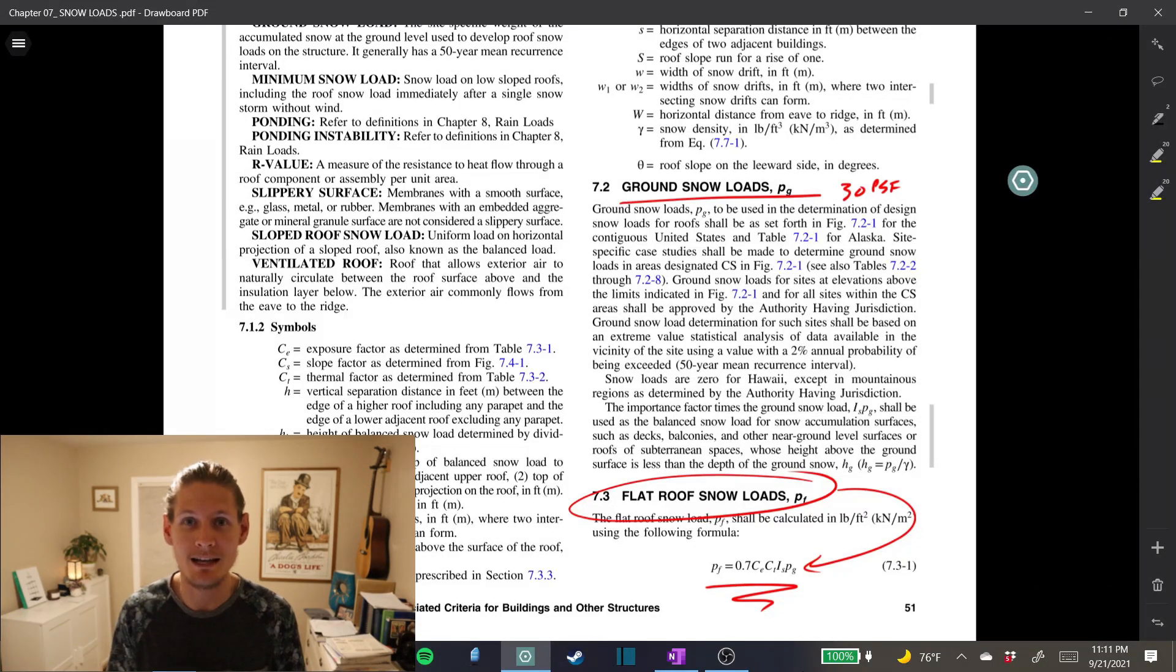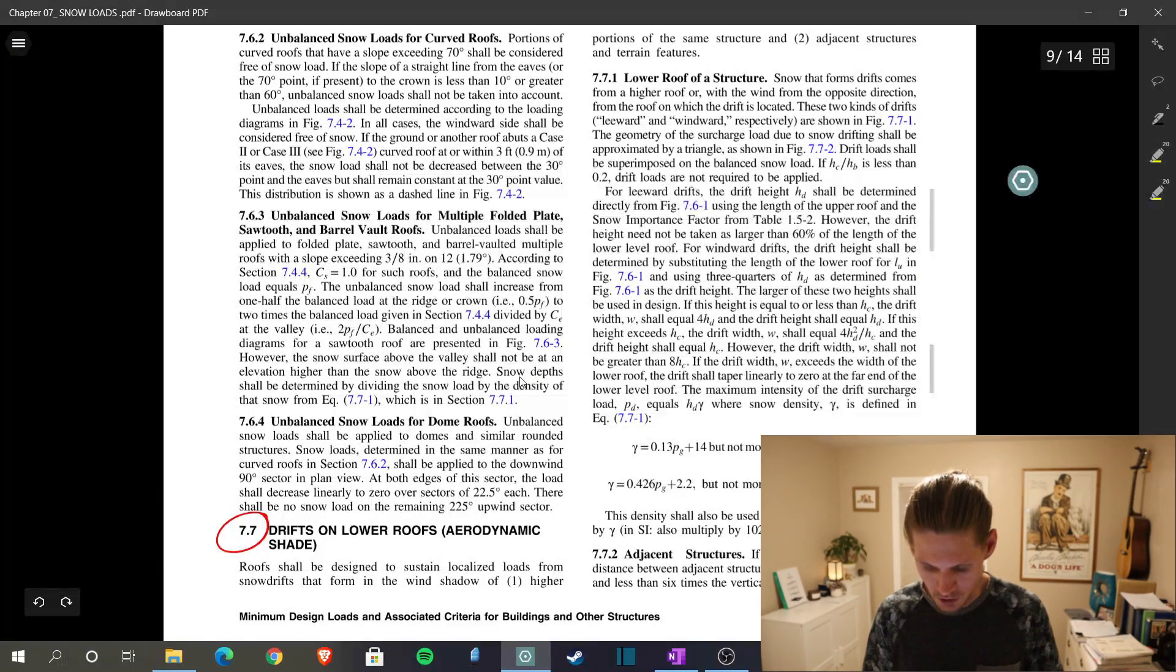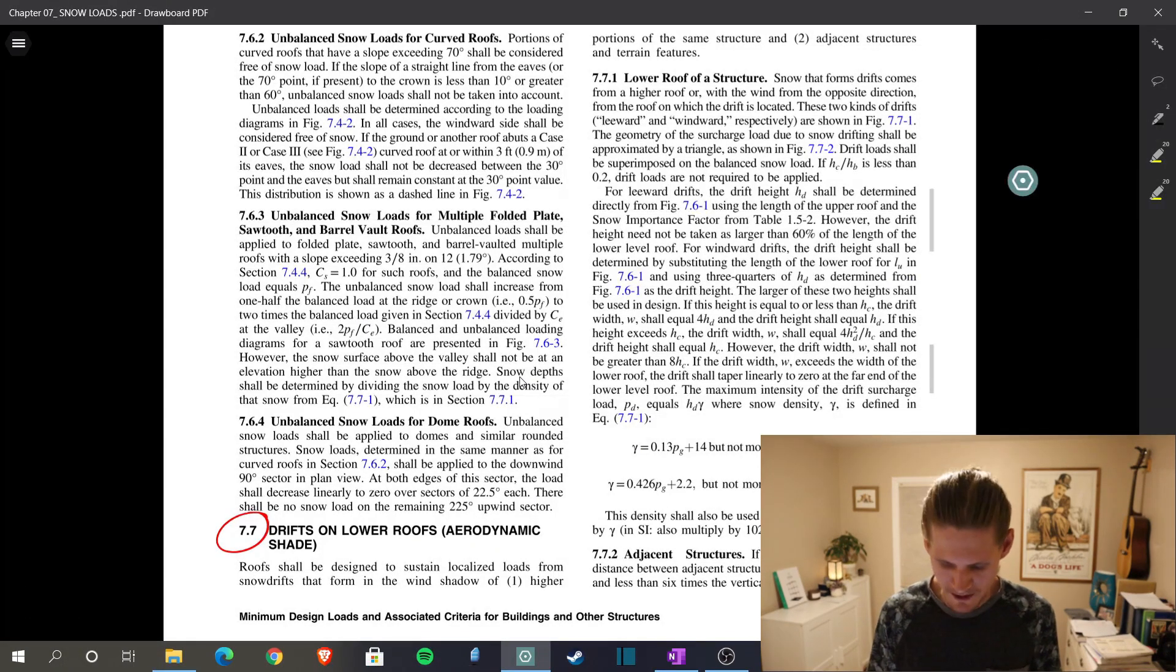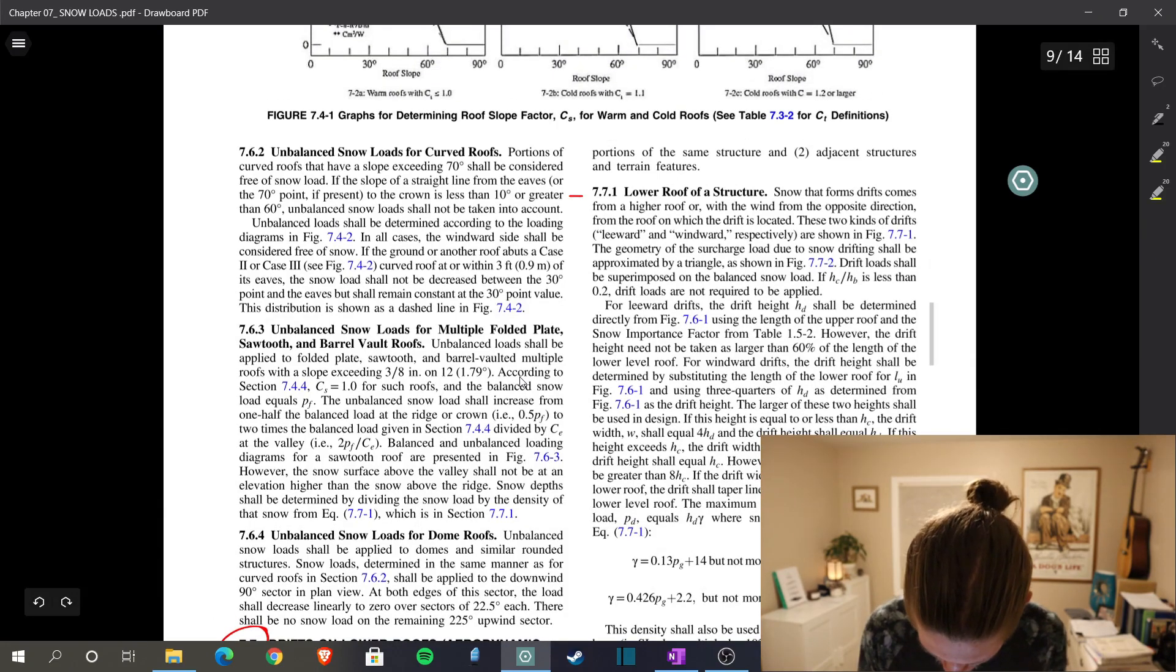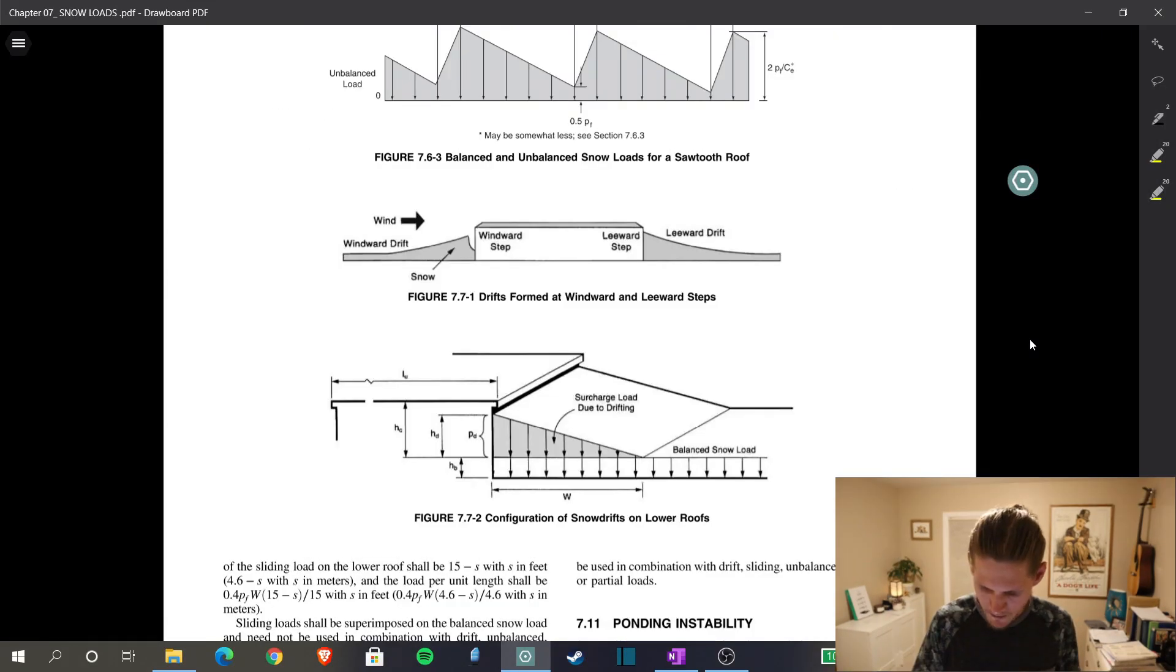If you were asked to find the cumulative height of the drift, then we would need to get into this, but we'd get to just cross that off right off the bat. So that's great. And you'll see that when we go to our drift calculations, we don't need any of this information. We don't need any of our roof snow loads. So that's really great. That means we get to jump over to section 7.7 drifts on lower roofs. That's exactly what we have.